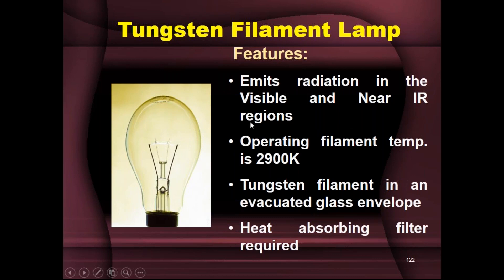The near-IR radiations are not desirable, so to eliminate them we use heat-absorbing filters placed between the source and the next component — the wavelength selector. Even if near-IR radiations are emitted, they are absorbed by this filter and never pass through the wavelength selector, so there's no question of them falling on the sample. This makes the tungsten filament lamp a widely used, reasonably cheap lamp for the visible region.